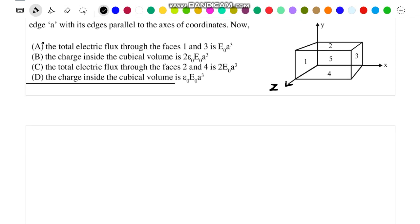So let us start with face number 1, that is the left most face. For face 1, I can write the x coordinate of all the points lying on this face is 0.